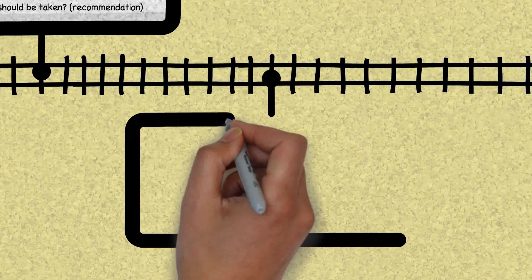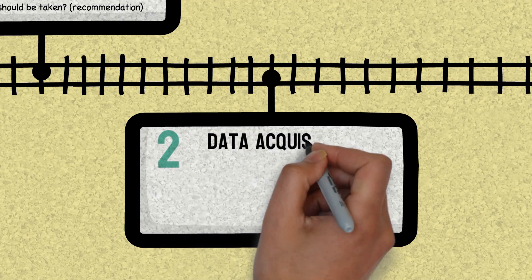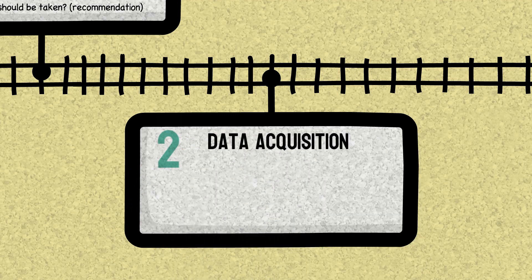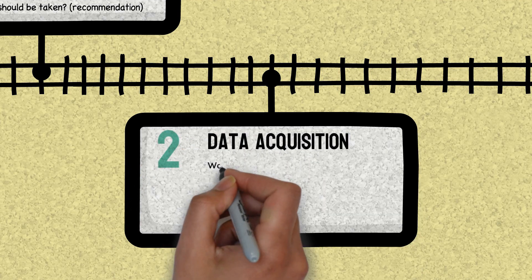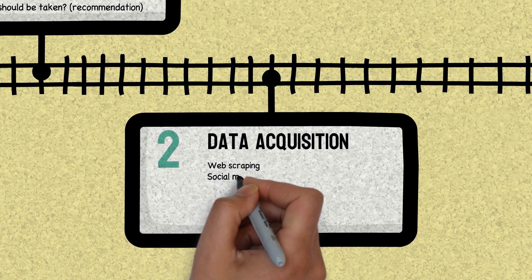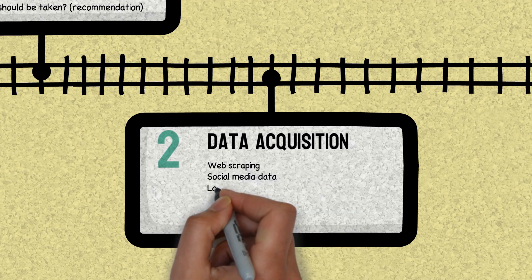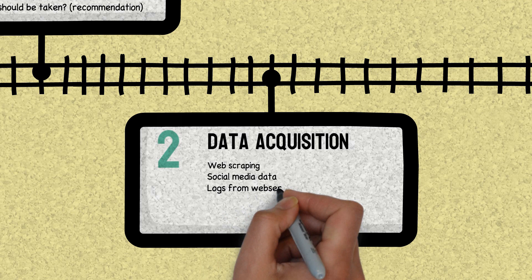Once we are done with understanding business requirements, we move towards collecting the suitable data. Here we make use of various methods to acquire data. Some of these are like web scraping where it crawls through the website. We can gather data from social media sites also.